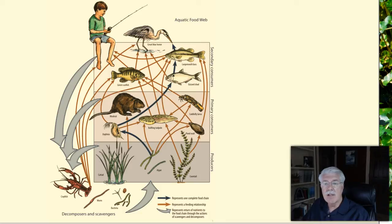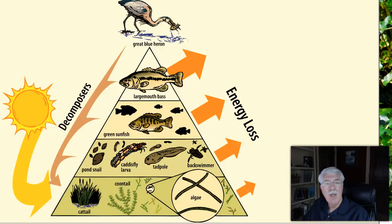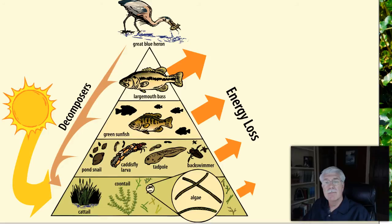Taking out any link in a food chain may upset the balance of the whole food web. An energy pyramid is another way to look at feeding relationships and energy flow through an ecosystem. Energy comes from the sun. The largest number of species and the greatest amount of available energy is in the producers that take the sun's energy and produce food. This forms the base of our energy pyramid.